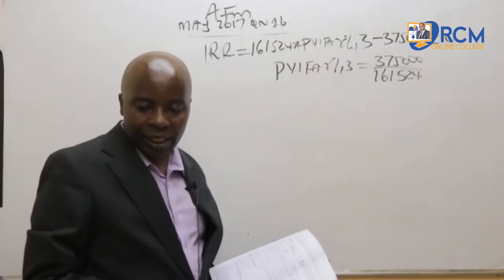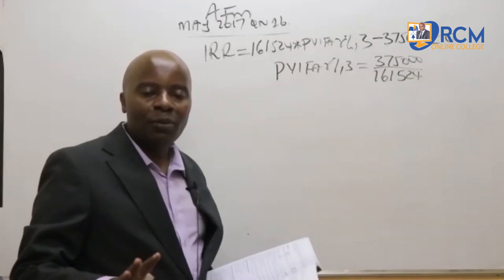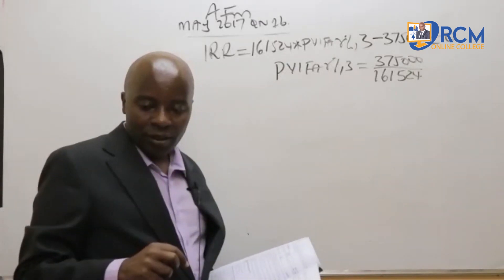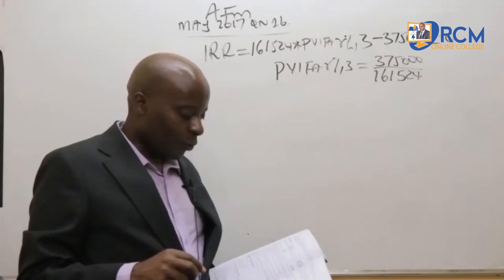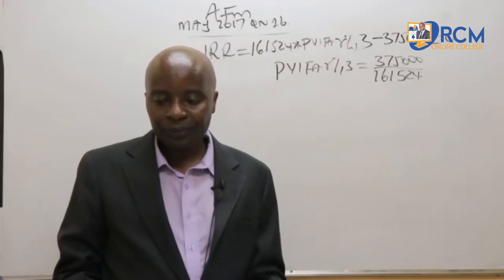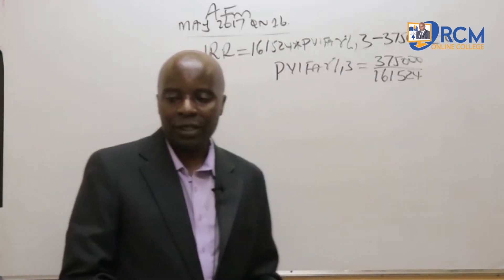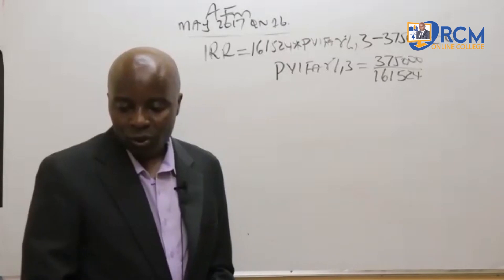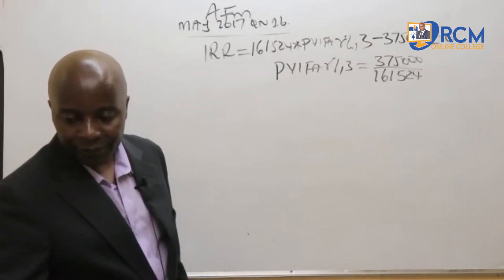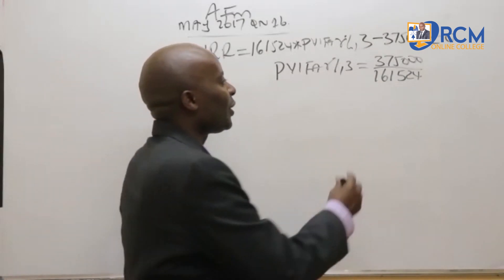According to Francisca, remember our PVIFA tables are how many decimal places? Four. Always write these in four decimal places. So we have from Cynthia Ngeno 2.3216.